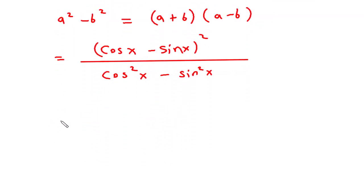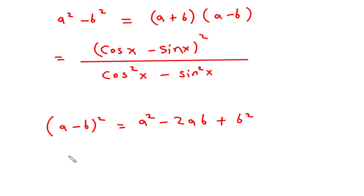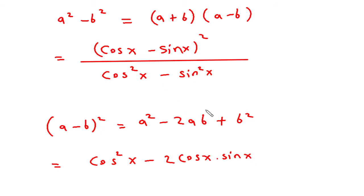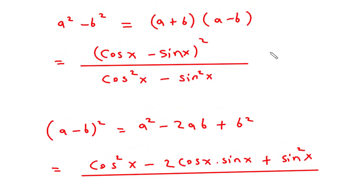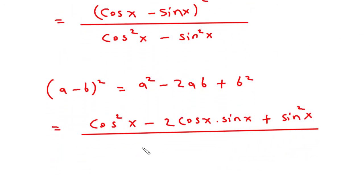For the numerator, we apply the formula: a minus b whole square equals a squared minus 2ab plus b squared. So cos x minus sin x whole square expands to cos squared x minus 2 cos x into sin x plus sin squared x, all divided by cos squared x minus sin squared x.